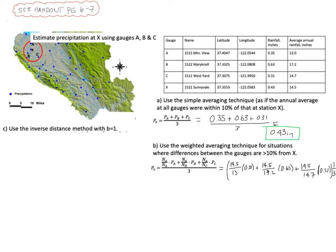And you divide that all by three and you will get an estimate for site X of 0.41 inches for the current storm.